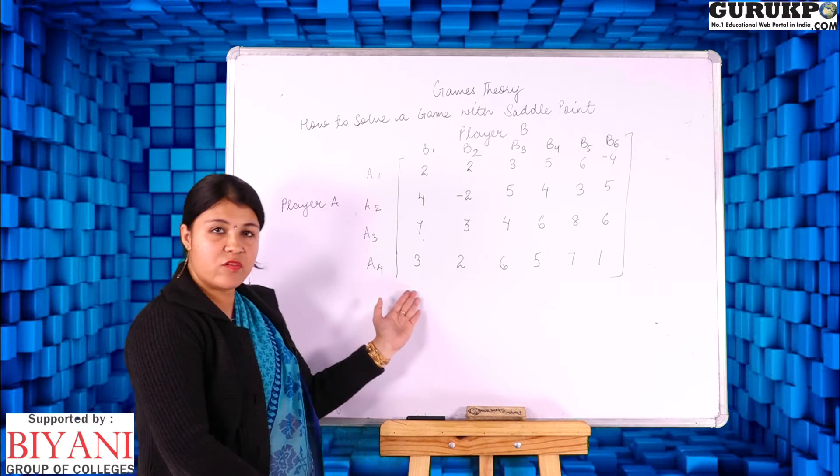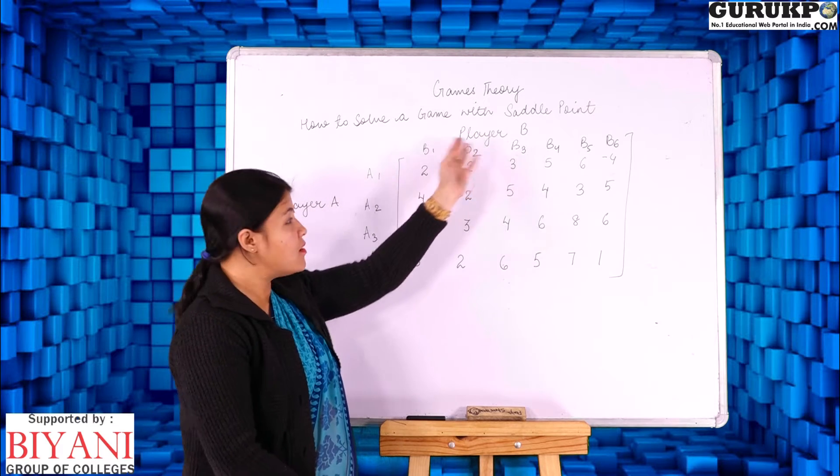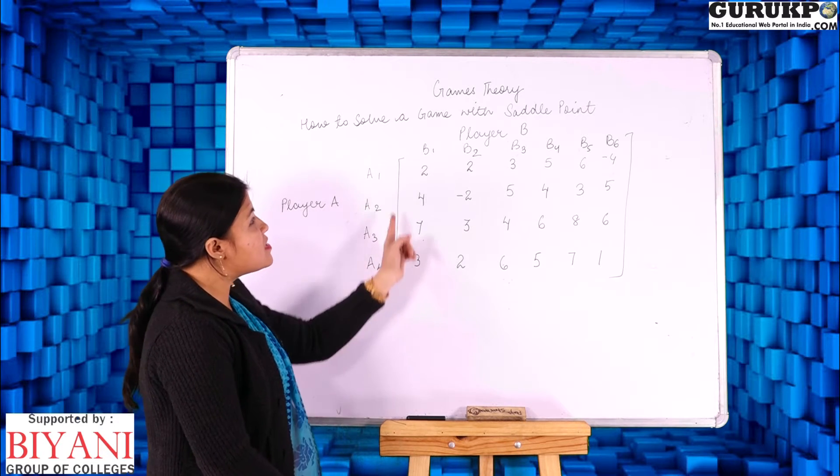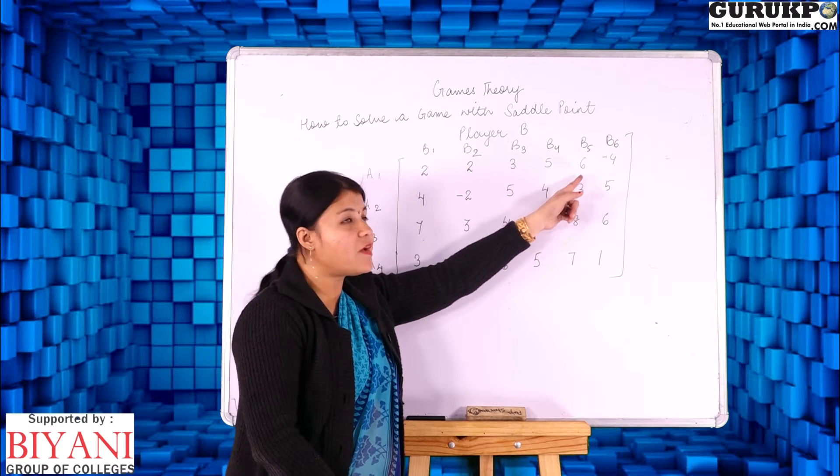Now this is our payoff metrics, this is row player and this is column player. These are the strategies for row player that is A1, A2, A3, A4 and these are the strategies for column player that is B1, B2, B3, B4, B5 and B6.